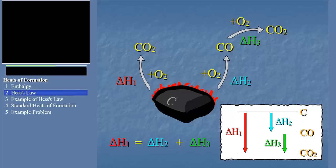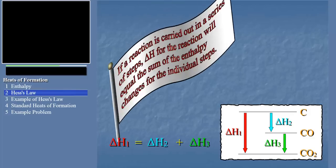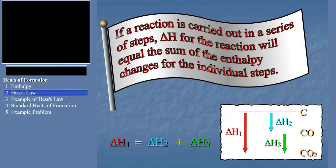It turns out that this idea works for any combination of sequential reactions. In general, we can say, if a reaction is carried out in a series of steps, delta H for the reaction will equal the sum of the enthalpy changes for the individual steps.